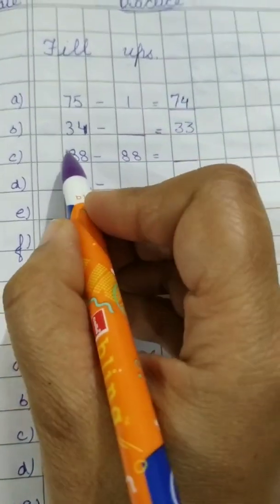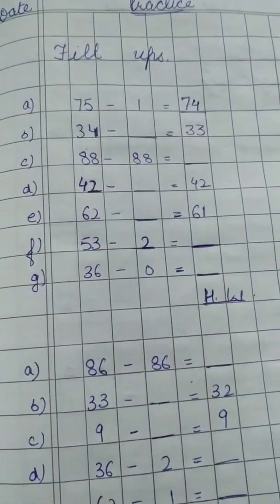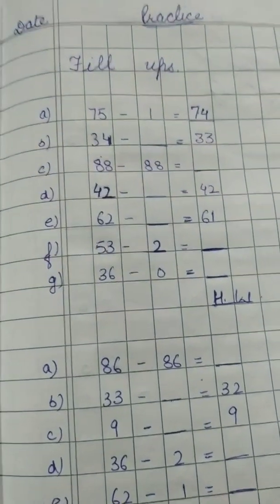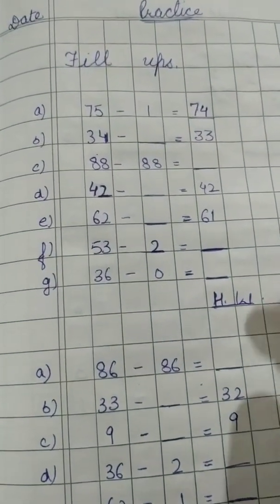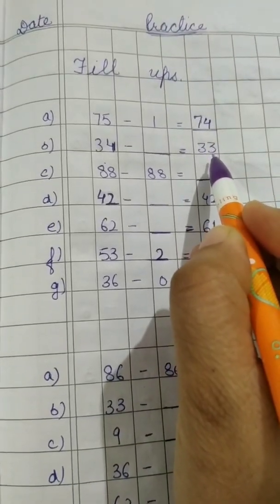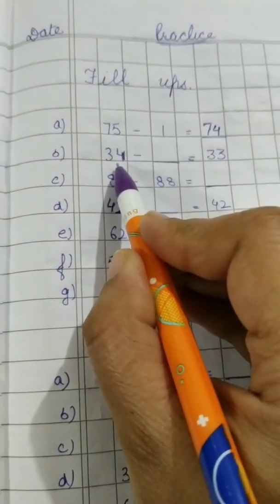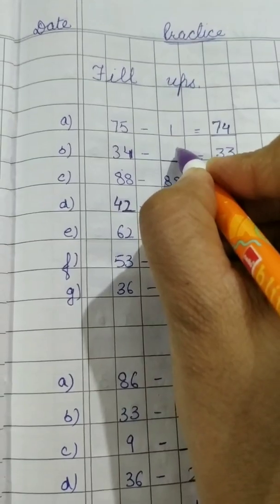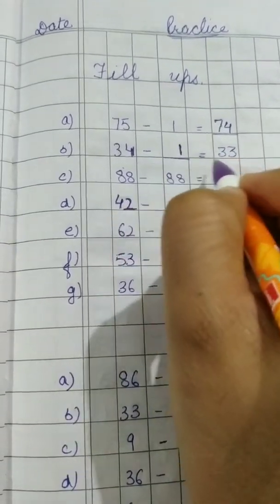Now B part, 34 minus dash is equal to 33. What could be subtracted from 34 to get 33? This is again a predecessor. So we can subtract 1 from 34 to get 33.